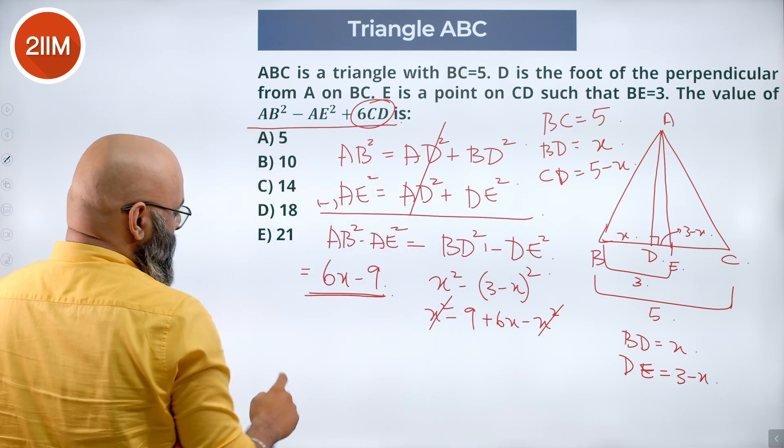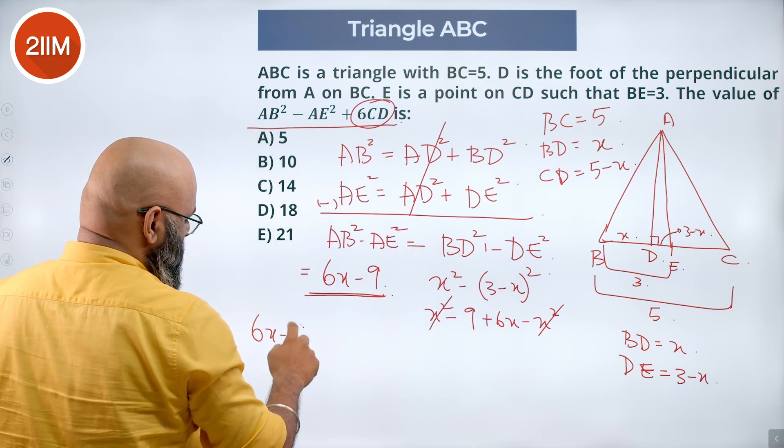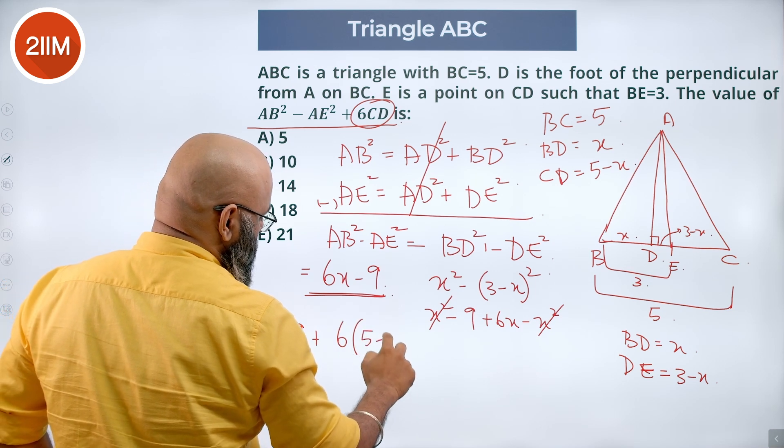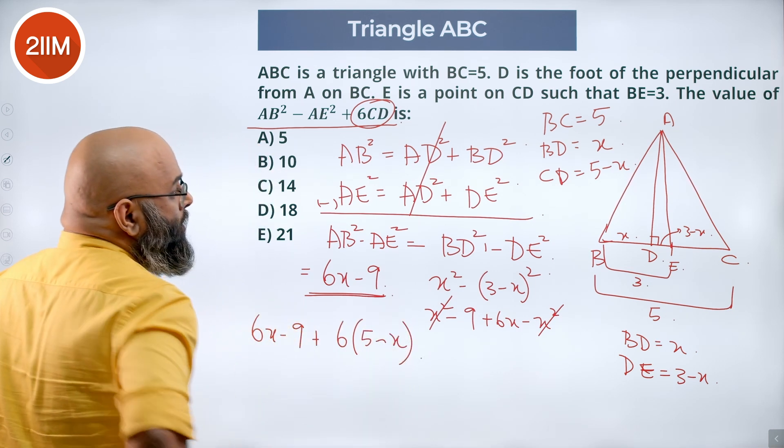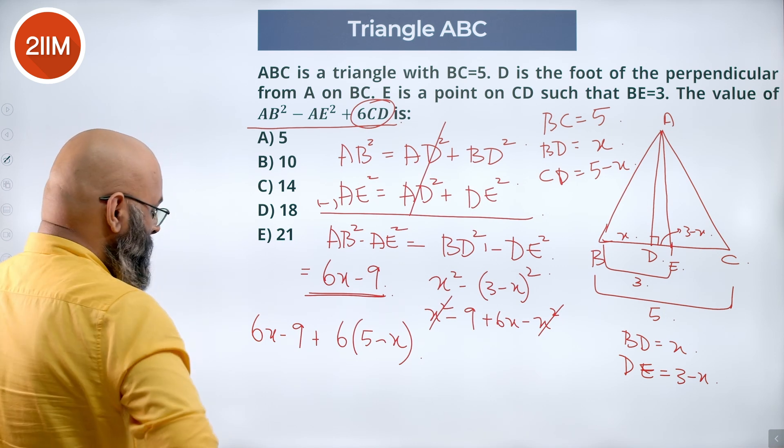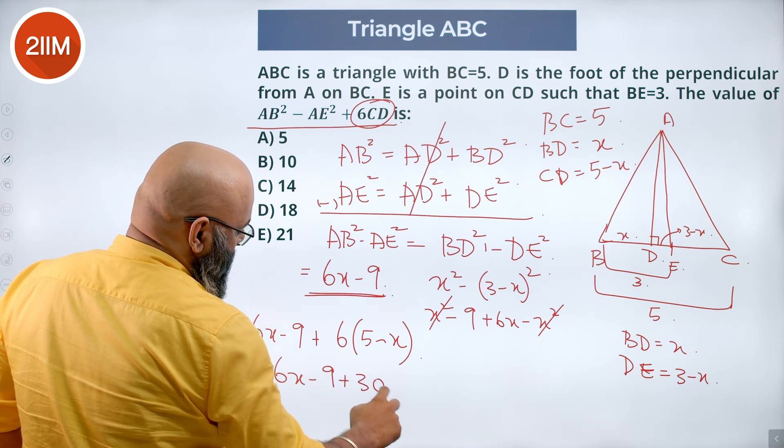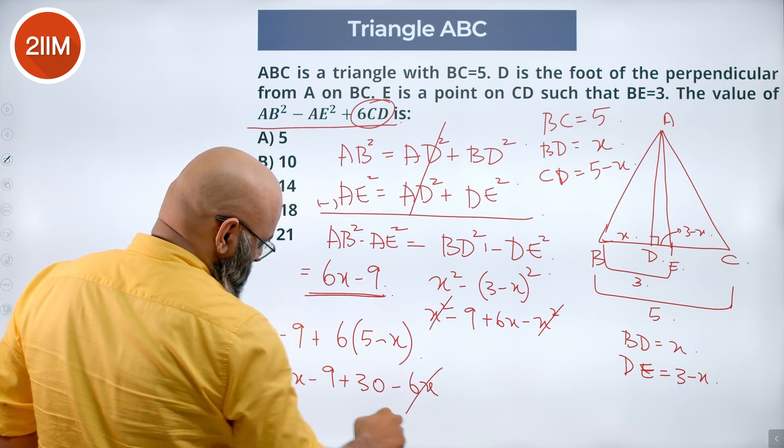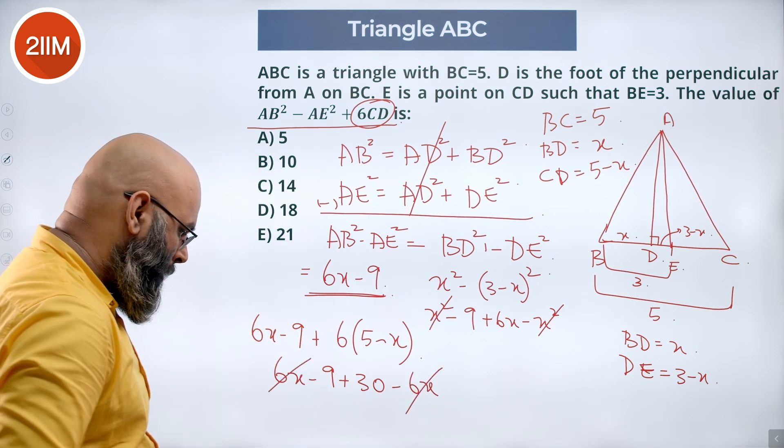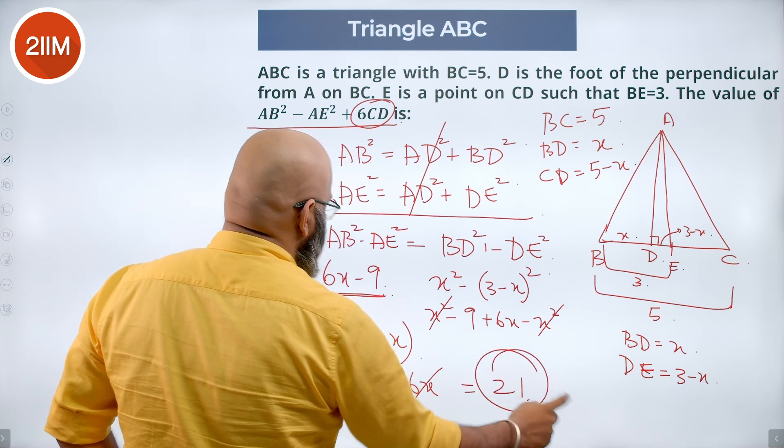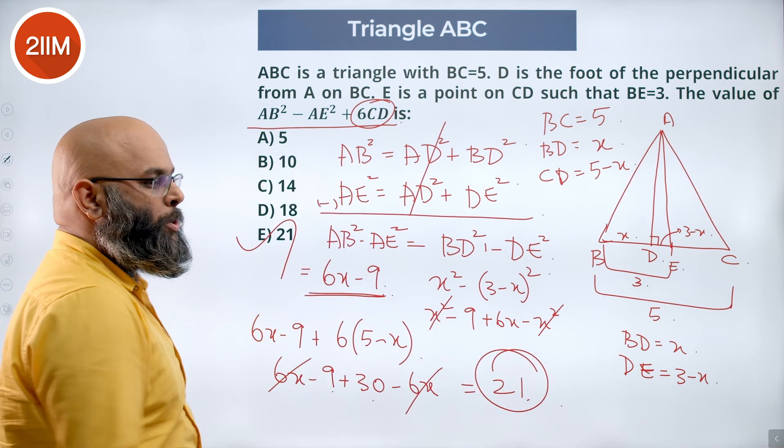Now we substitute this part over here. You get 6X minus 9 plus 6 into 5 minus X. CD is nothing but 5 minus X. So 6X minus 9 plus 30 minus 6X. Minus 6X plus 6X goes, so 30 minus 9 gives you 21. So option E.